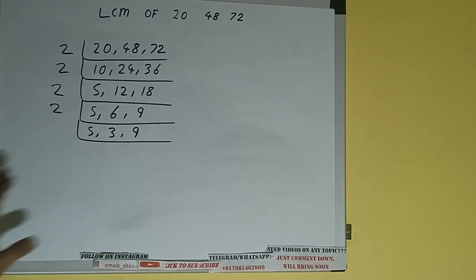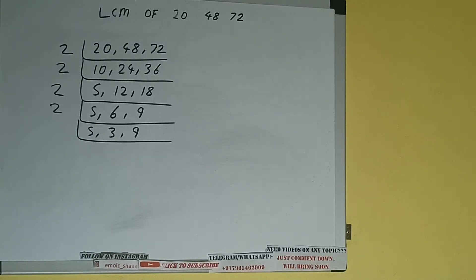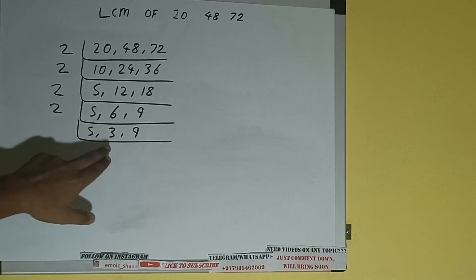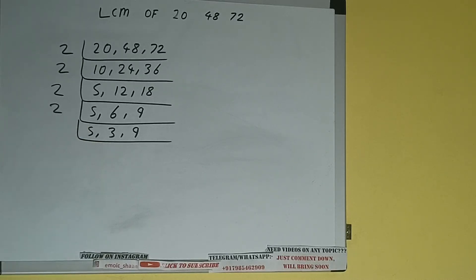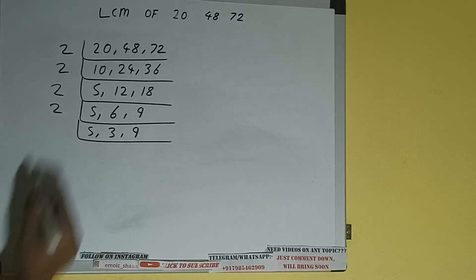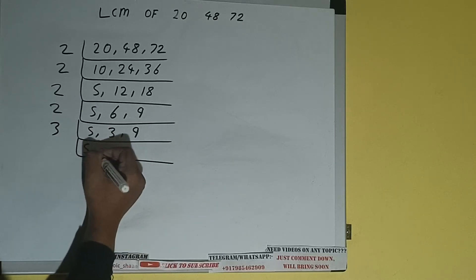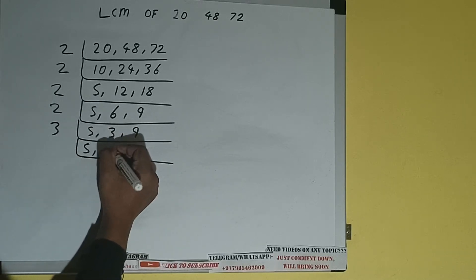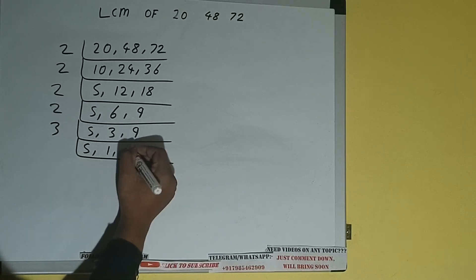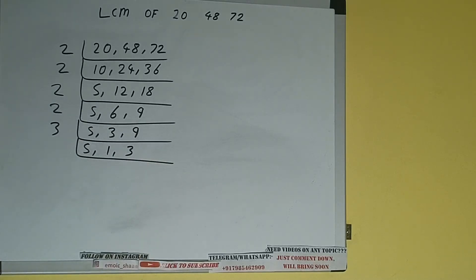Now none of the numbers are divisible by 2, so we'll check with the next lowest prime number, which is 3. The second and the third numbers are divisible by 3, so we'll divide those and copy the first number down. This will become 1 and this will become 3.